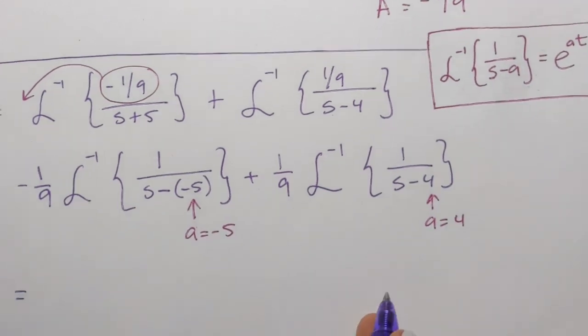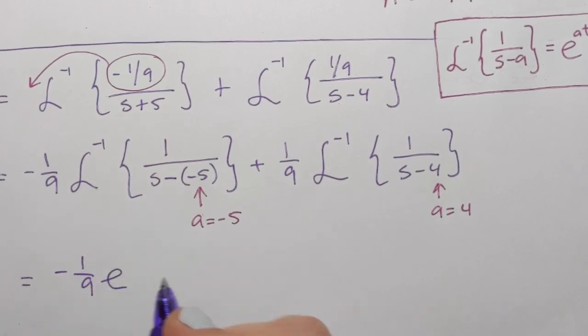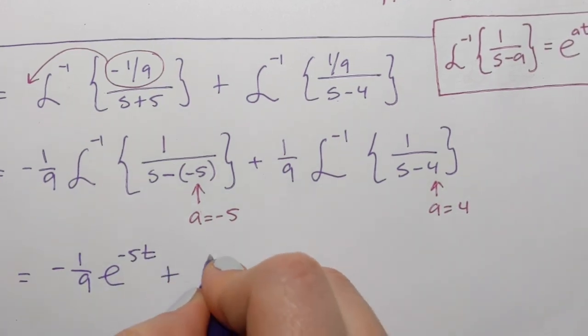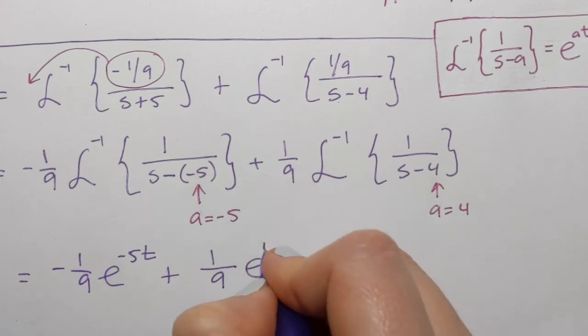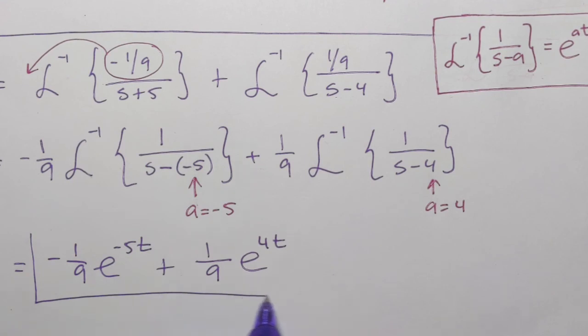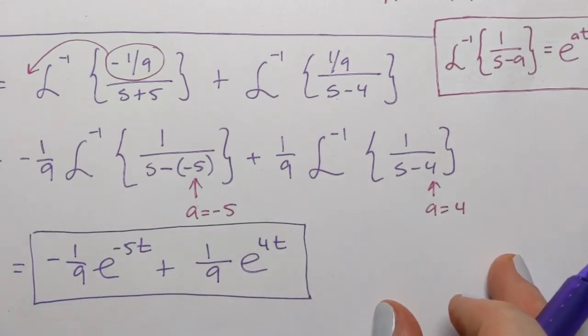So here's the answer. It's negative 1 over 9 times e to the power of negative 5 t plus 1 over 9 times e to the power of 4 t. And that's going to be the answer. That's the inverse transform of the given function.